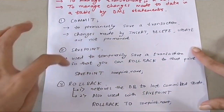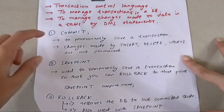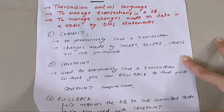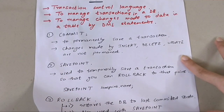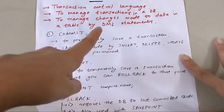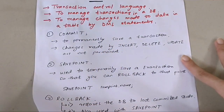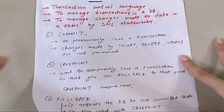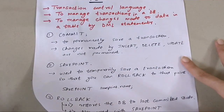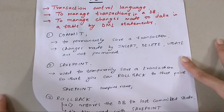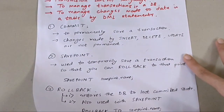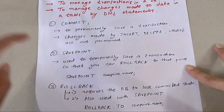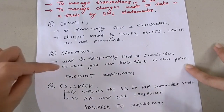There are three TCL commands: COMMIT, SAVEPOINT, and ROLLBACK. The first is COMMIT, used to permanently save a transaction. Changes made by INSERT, DELETE, and UPDATE are not permanent until you use COMMIT. Simply write COMMIT; to permanently save whatever changes you made.